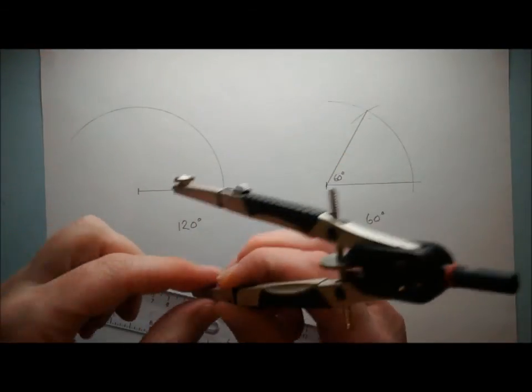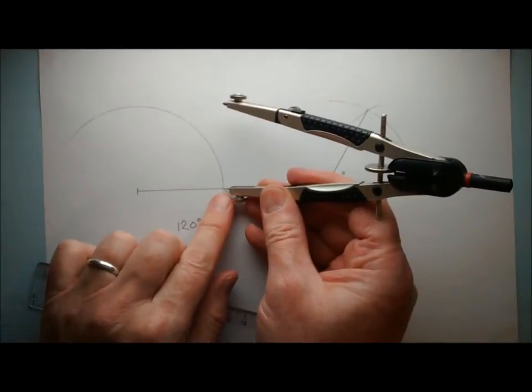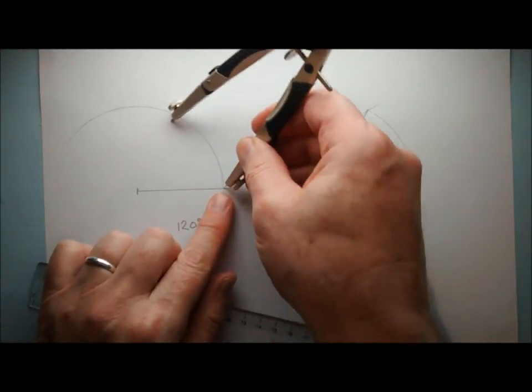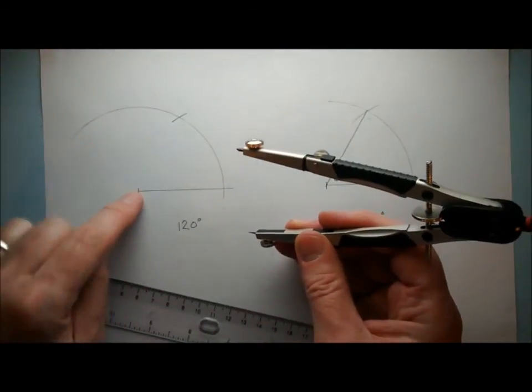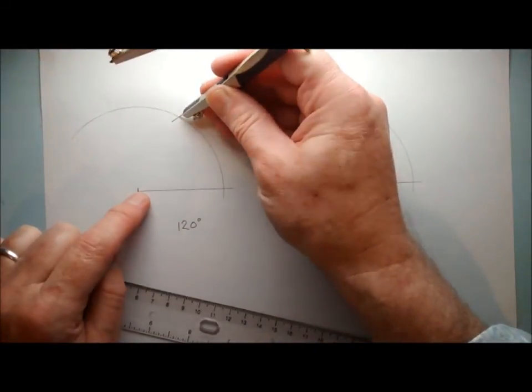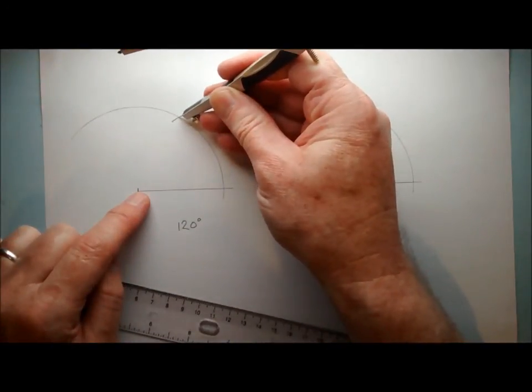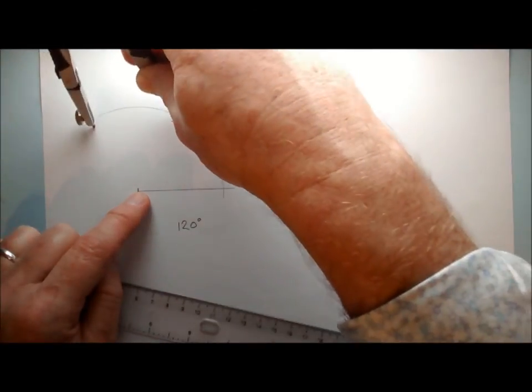keep the radius the same, point here, mark off a little arc here, that would be 60 degrees. So we're going to do exactly the same again. So point in here, mark off a little arc here,